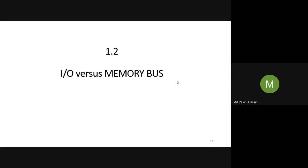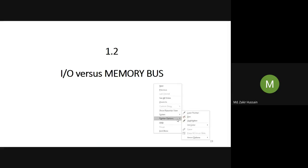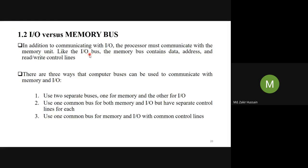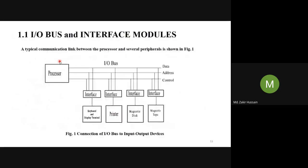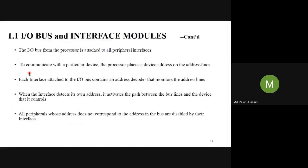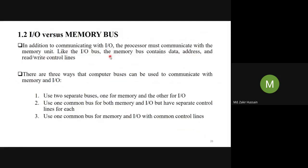Let us continue with our I/O versus memory bus. Whenever I am moving from the slideshow, I have to pick this. Anyway, there's I/O versus memory bus back here. So in this, in addition to communicating with I/O, the processor must communicate with the memory unit also. That's what I was talking about just before. In addition to this processor talking to this I/O device, to this I/O bus, it should be able to communicate with the memory also. For that reason, we call something called memory bus.